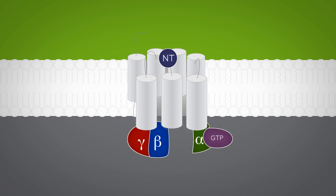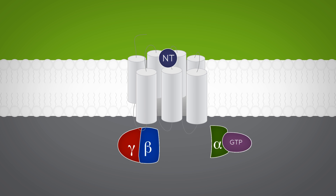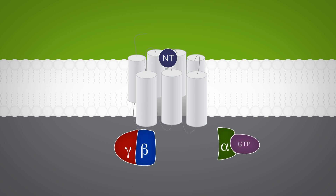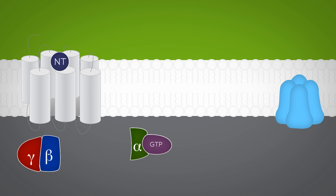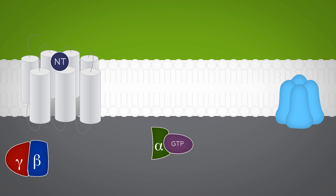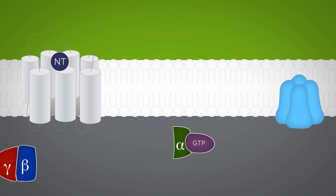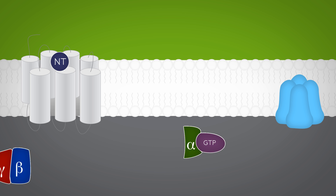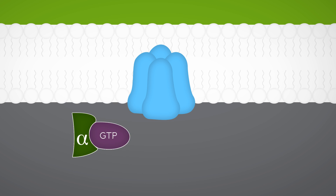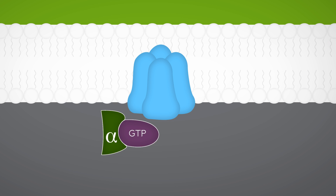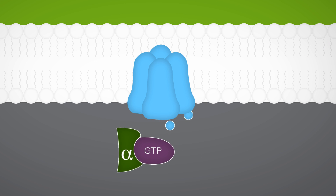This results in the G-protein subunits disassociating from the receptor, as well as each other. The alpha subunit then binds to an effector protein, such as an enzyme, which then acts to increase or decrease the production of a second messenger.